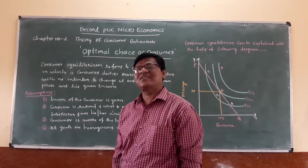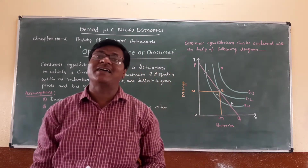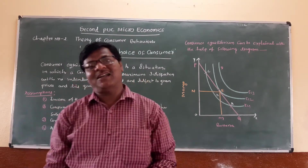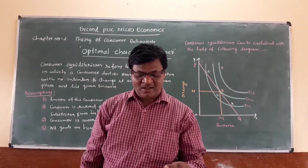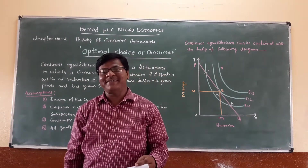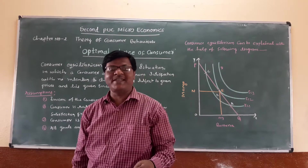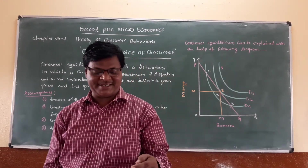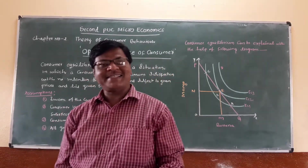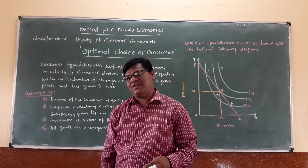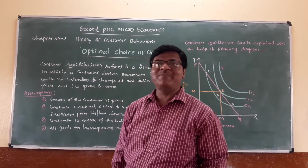The higher indifference curve represents a higher level of satisfaction than any lower indifference curve. So the consumer always tries to remain at a higher level of satisfaction, subject to his limited income constraints. The consumer is in equilibrium where the slope of the price line is equal to the indifference curve — that is the optimal choice of consumers.